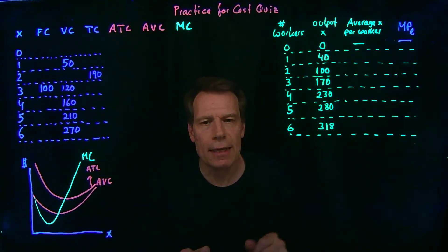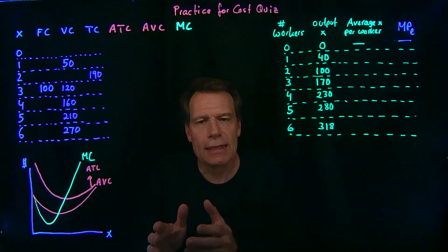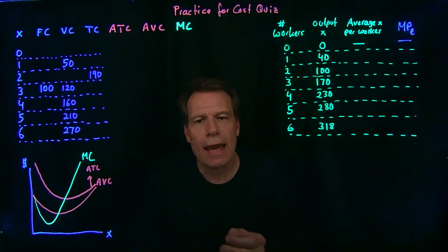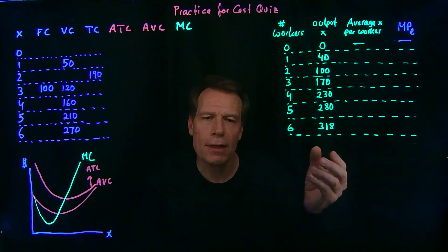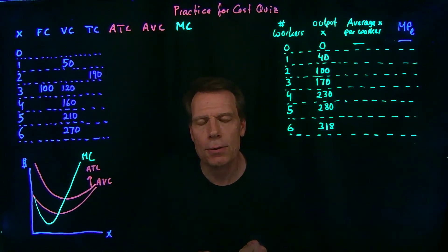And if that's the case, the average curve should have U-shapes as well. Because if it's initially getting easier and easier to produce, then average costs should initially be falling, and eventually they'll rise as it gets harder and harder to produce.